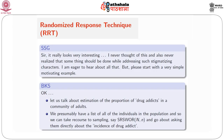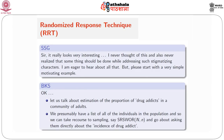We decide on the sample size small n, knowing the population size capital N. It is very easy to implement this sampling design, and we go about asking them directly about the incidence of drug addiction. What will happen? As you said, I understand it could be a sensitive issue to most sampled respondents, and so we may not expect to receive truthful responses. So, as against the direct question technique, Warner suggested something else, right?